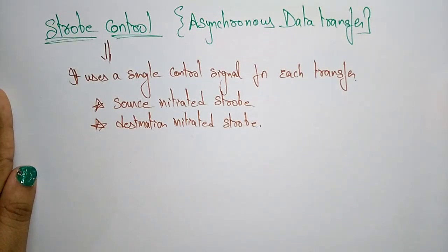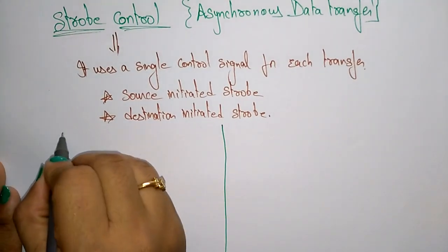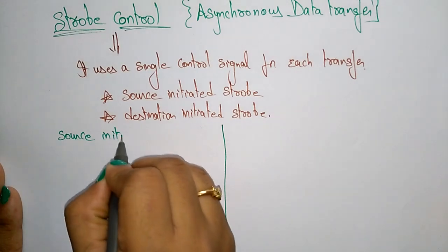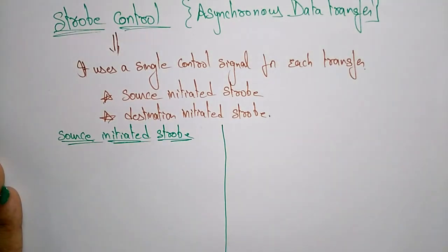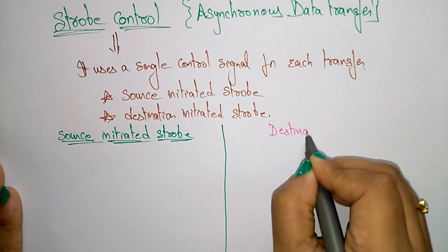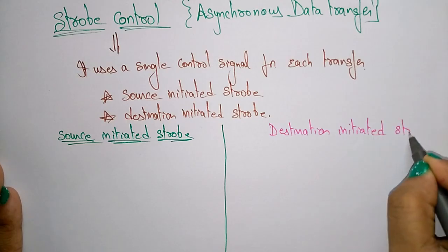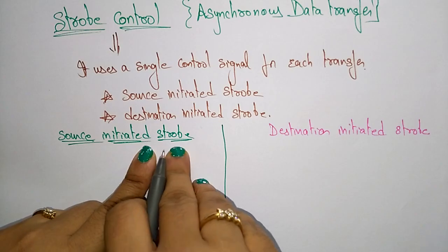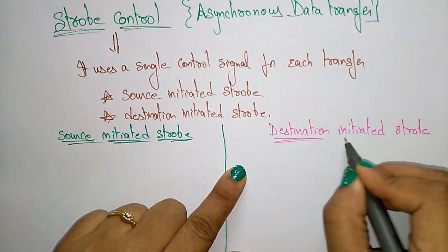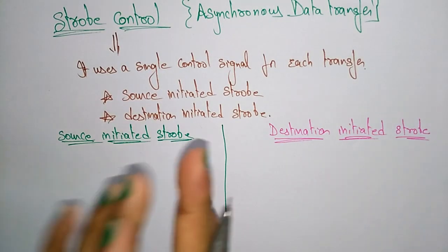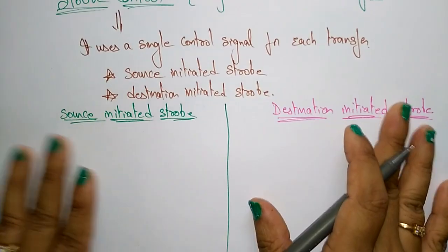Let us see what source-initiated and destination-initiated mean. In source-initiated strobe, the single control signal is initiated by the source. In destination-initiated strobe, the single control signal is initiated by the destination. That is the only difference between these two.